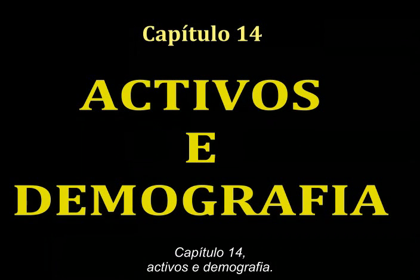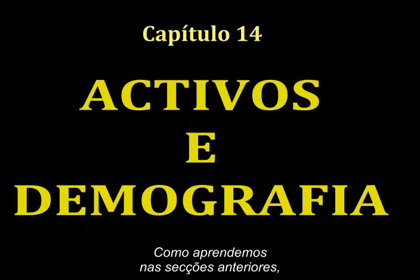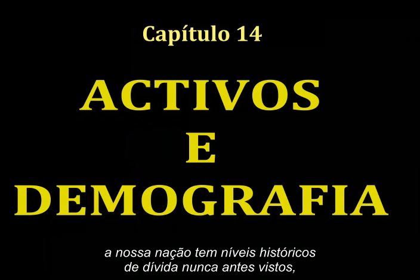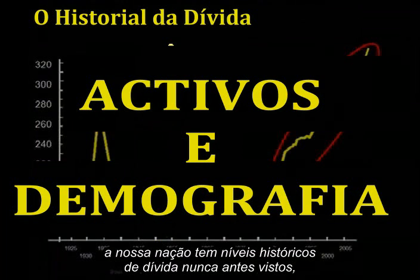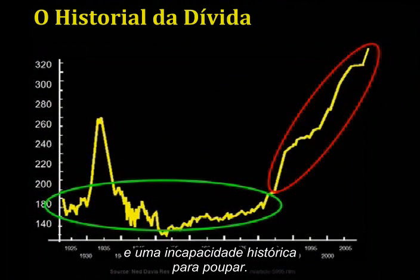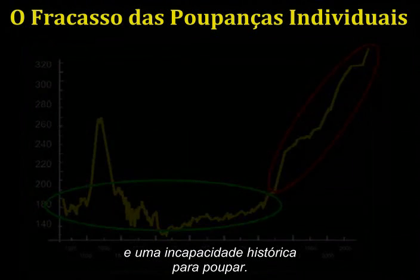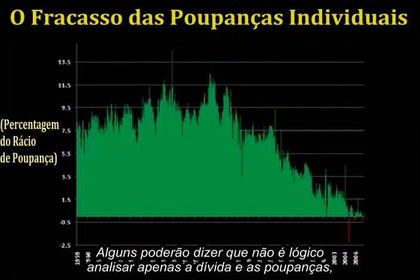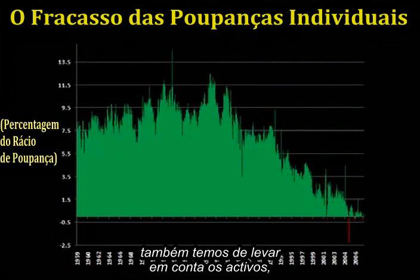Chapter 14: Assets and Demographics. As we learned in previous sections, our nation has historic, never-before-seen levels of debt and an historic failure to save. Some would say it's not reasonable to look only at debt and savings — one also has to consider assets.